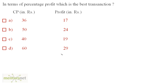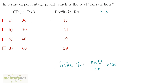For that, you must know the formula for percentage profit. Percentage profit is equal to the profit divided by the cost price, times 100. For the first option, profit upon cost price is 17 upon 36, times 100, and that comes out as 47 2/9 percent.